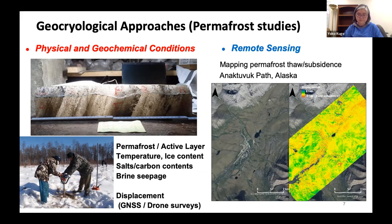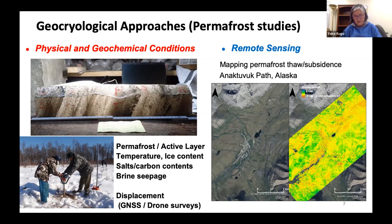We will also collect and analyze permafrost samples, frozen ground stability, and future impacts of permafrost thaw. On the right is a map of the spatial distribution of ground displacement around Anaktuvuk Pass, which we shared when we went there last summer. This kind of displacement is often associated with permafrost.